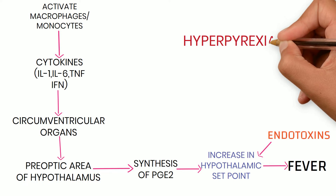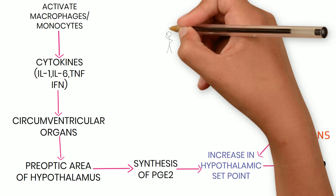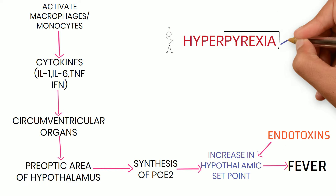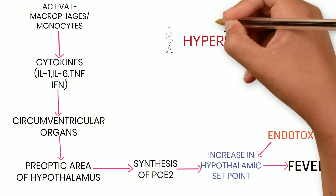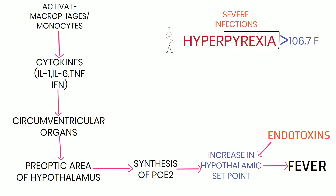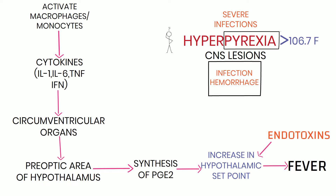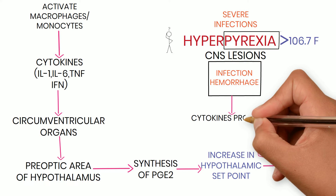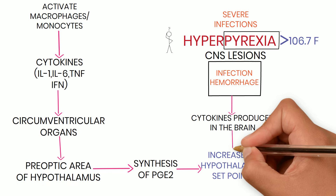What is hyperpyrexia? Here, temperature is more than 106.7°F. Severe infections can result in hyperpyrexia, as can CNS lesions such as CNS infection or hemorrhage. These can cause release of cytokines in the brain, resulting in an increased hypothalamic set point.